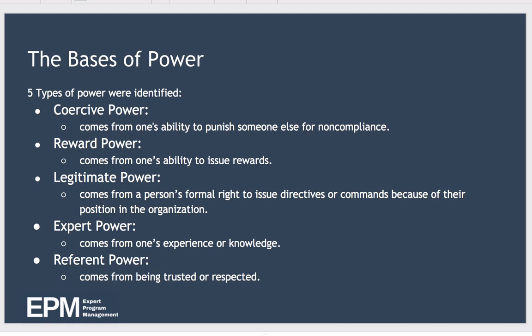Fourthly, expert power, which comes from one's experience or specialist knowledge. For example, a senior surgeon will display expert knowledge for subordinates to trust them, and in a surgeon's case it will probably be backed up by qualifications. Referent power comes from being trusted or respected — this is where people refer to you to find out what to do. Typically, people with referent power are role models, such as a boss who treats everyone fairly and with respect.